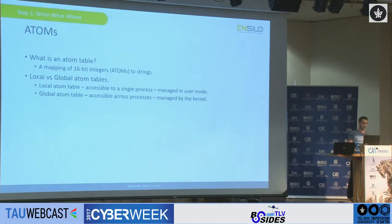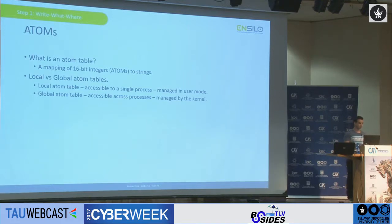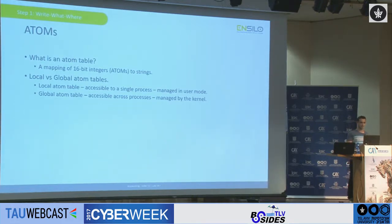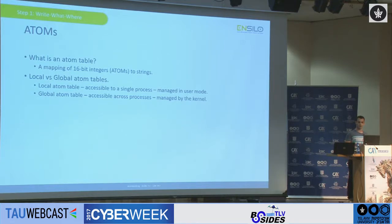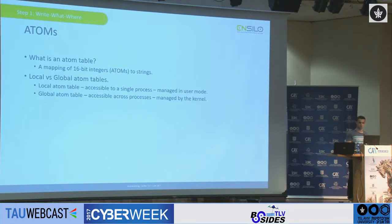In order to understand atom bombing, we first have to understand atoms. So what is an atom table? An atom table is really just a mapping of 16-bit integers to strings. For example, as an app developer, I can call the OS, pass a string to it, and ask the OS to store it for me. I get an atom back in return, and I can save the atom where I want. Whenever I want to get the string back again, I simply call the OS again and give it the atom received from the previous call, and the OS will return the string to me.